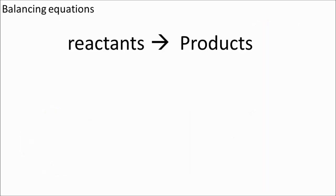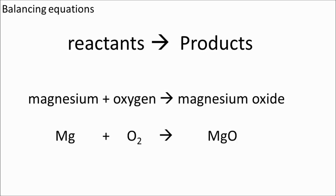Let's move on to balancing equations. So on the left-hand side we have reactants, on the right-hand side we have the products. The reactants turn into the products. And if you know anything about conservation of mass, you know that the reactants will have the same mass as the products.